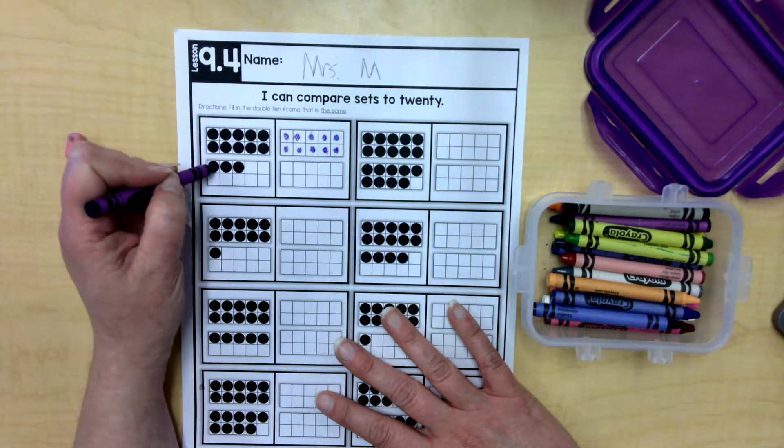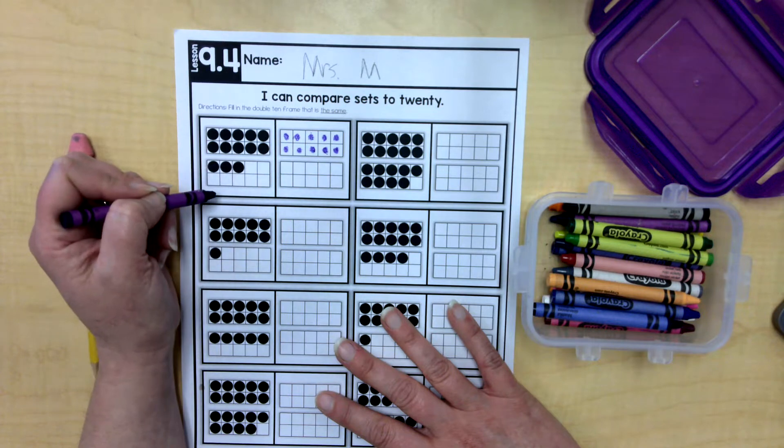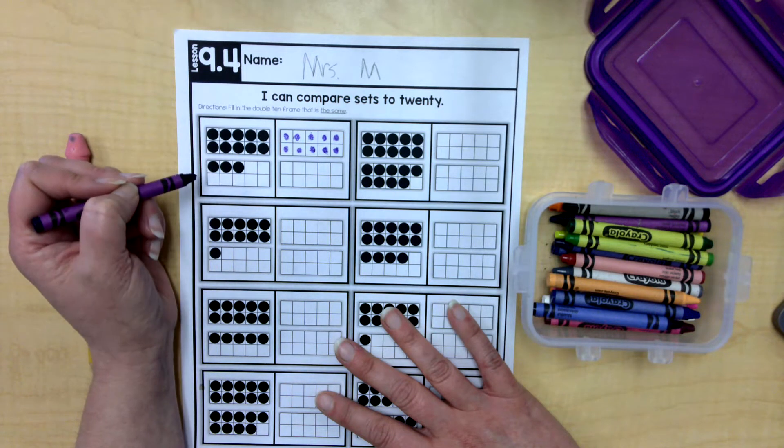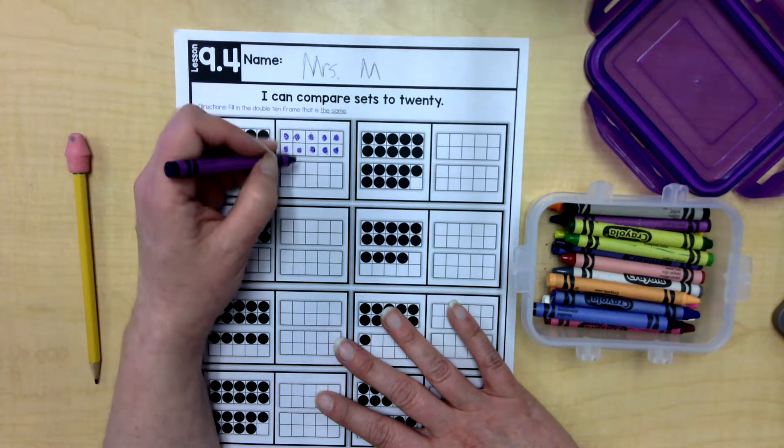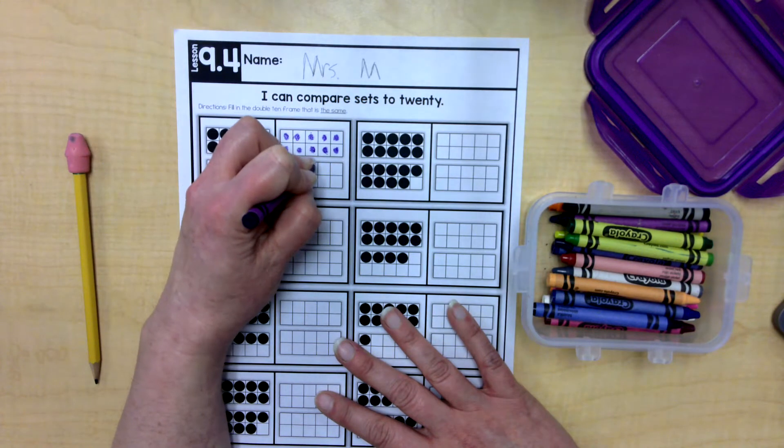Now this one has one, two, three. So there's 10 and three more. Well, 10 and three more. That makes 13. 11, 12, 13.